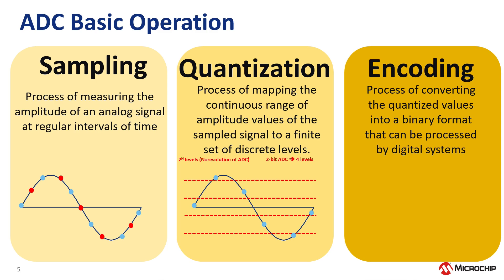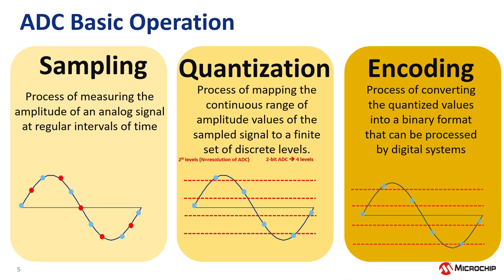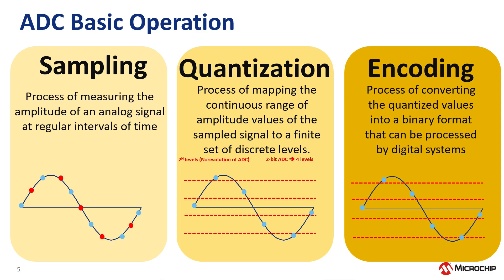After quantization is done, the quantized values are then encoded in binary format. Encoding is the process of converting the quantized value into a binary format that can be processed by a digital system. For example, a 4-level quantization has a 2-bit binary format expressed as 00, 01, 10, and 11. For a 3-bit binary format, it would be 000, 001, and so on.